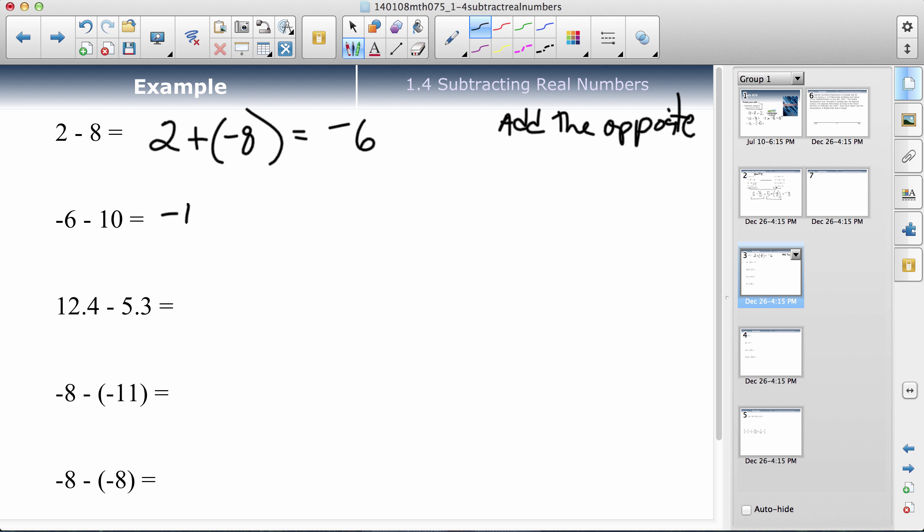Try it with this one. Negative 6, the minus changes to a plus, which 10 changes to a negative. Same sign, add 6 and 10 is 16, and keep the sign. Next one. This is just a normal subtracting. Let's write it again. 12.4 plus a negative 5.3. Rules are different signs subtract, so that'd be 7.1, I think. And this one's furthest from zero, so it would be positive. Same sign as that.